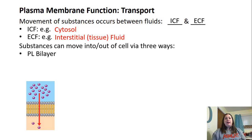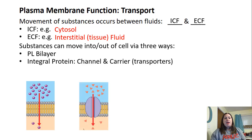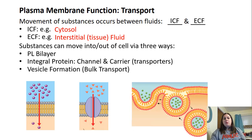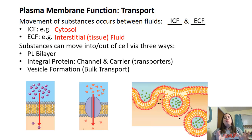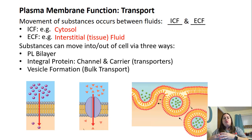The first way is through the lipid bilayer itself — moving directly across that barrier. Another way is using a channel or carrier transporter, which are those integral proteins, kind of like a bridge to get across the lipid sea. Or they can create a vesicle, which is what we call bulk transport because we're moving large amounts at once. The plasma membrane pinches off and becomes a vesicle full of the substance being brought into or out of the cell.